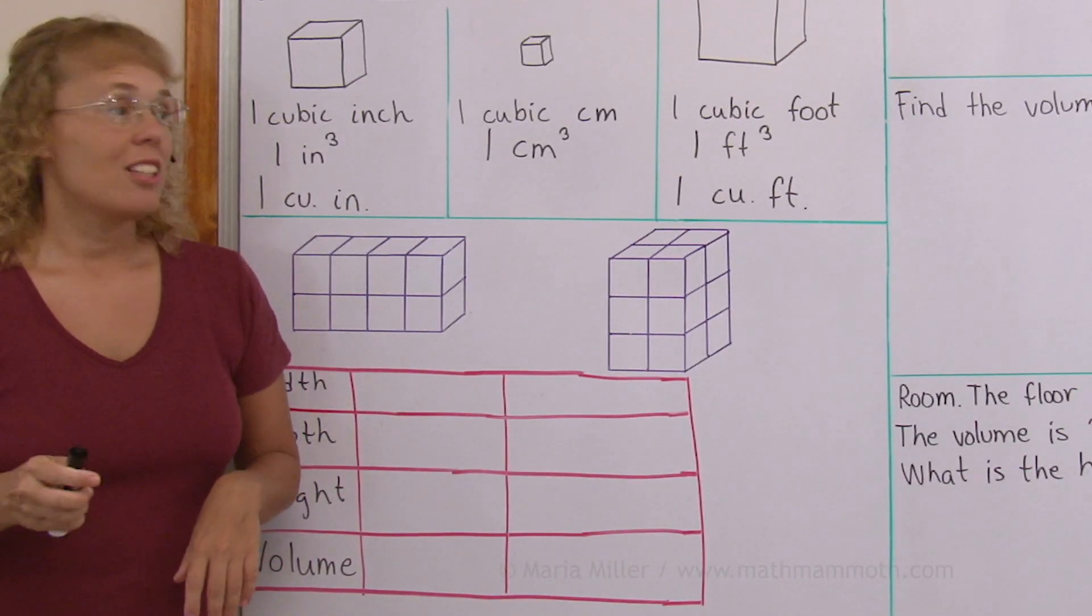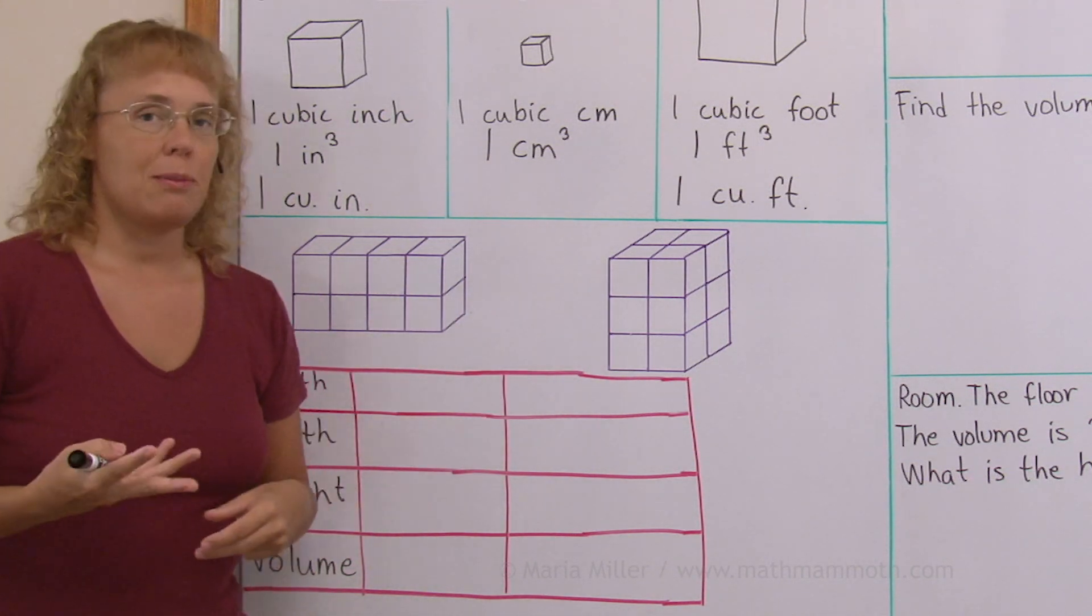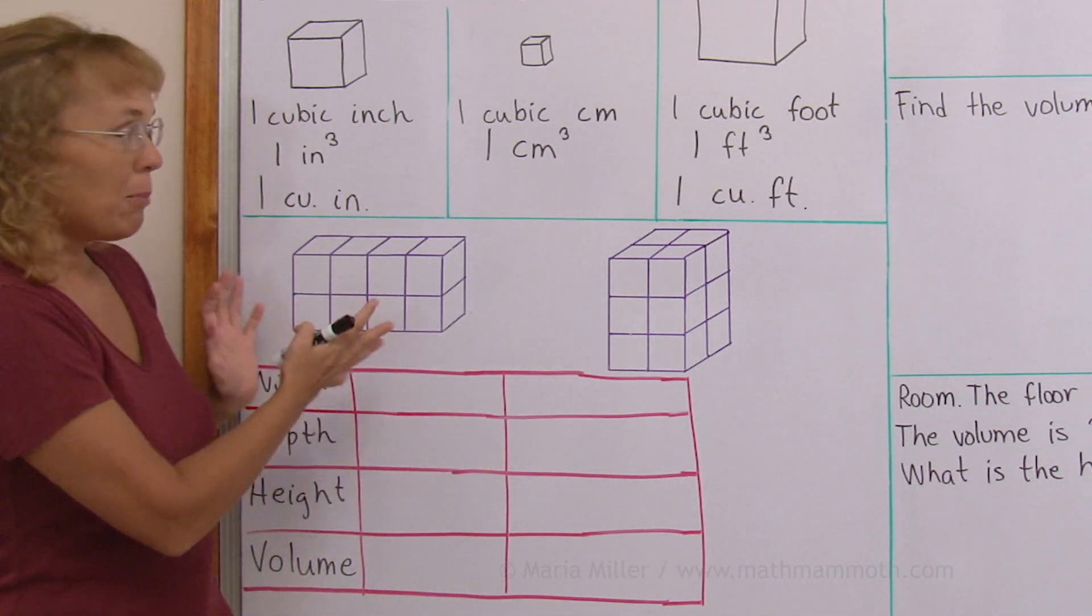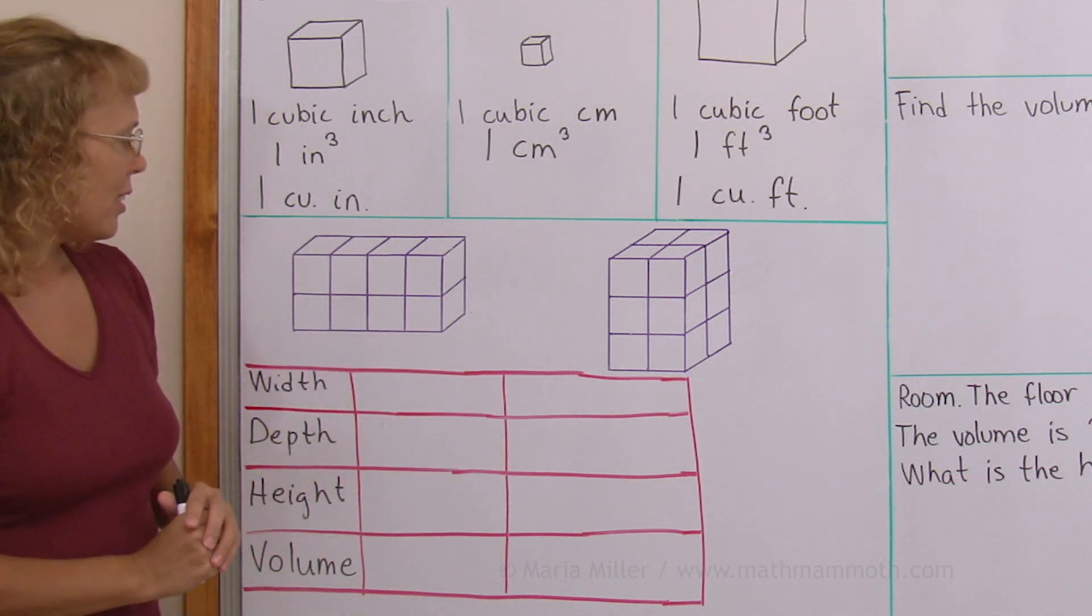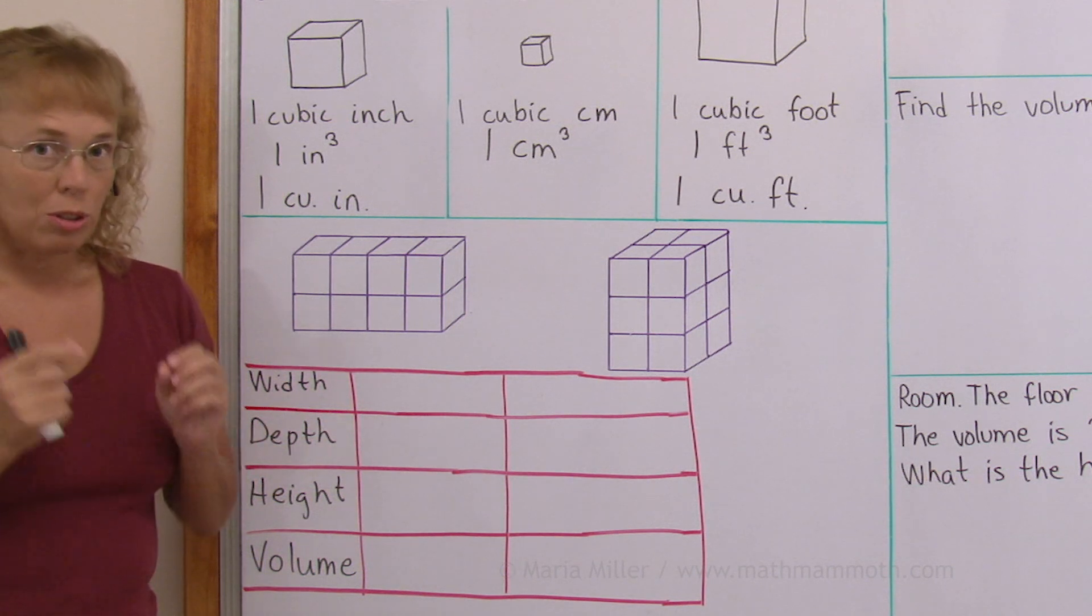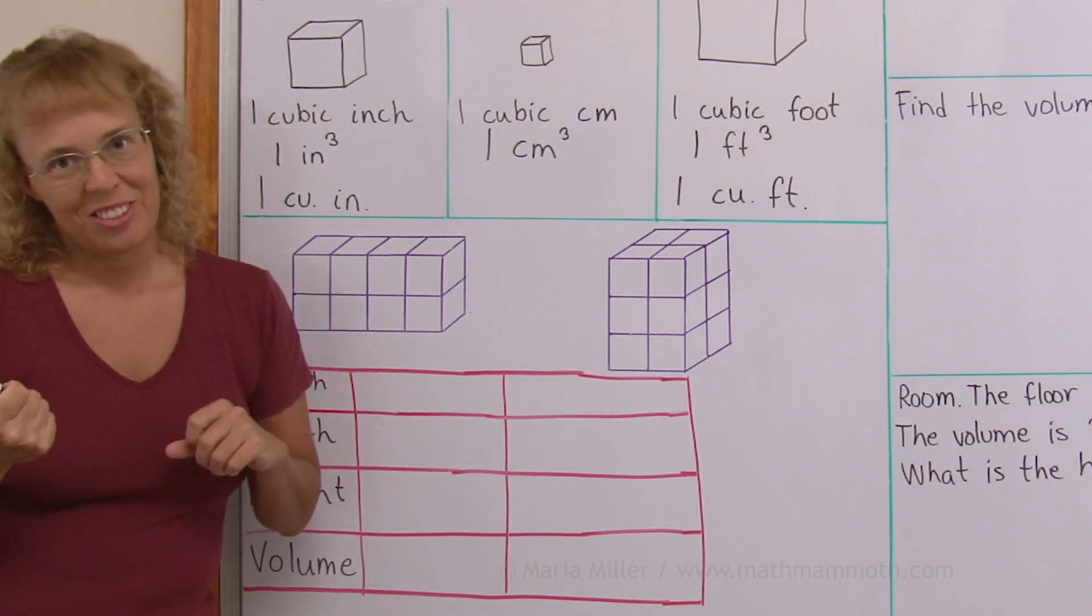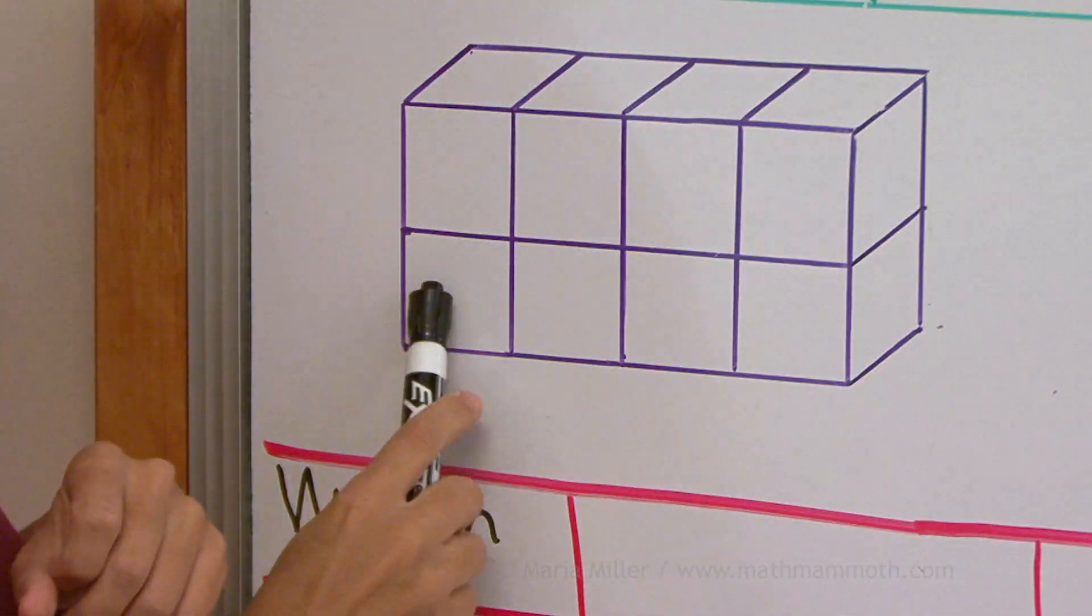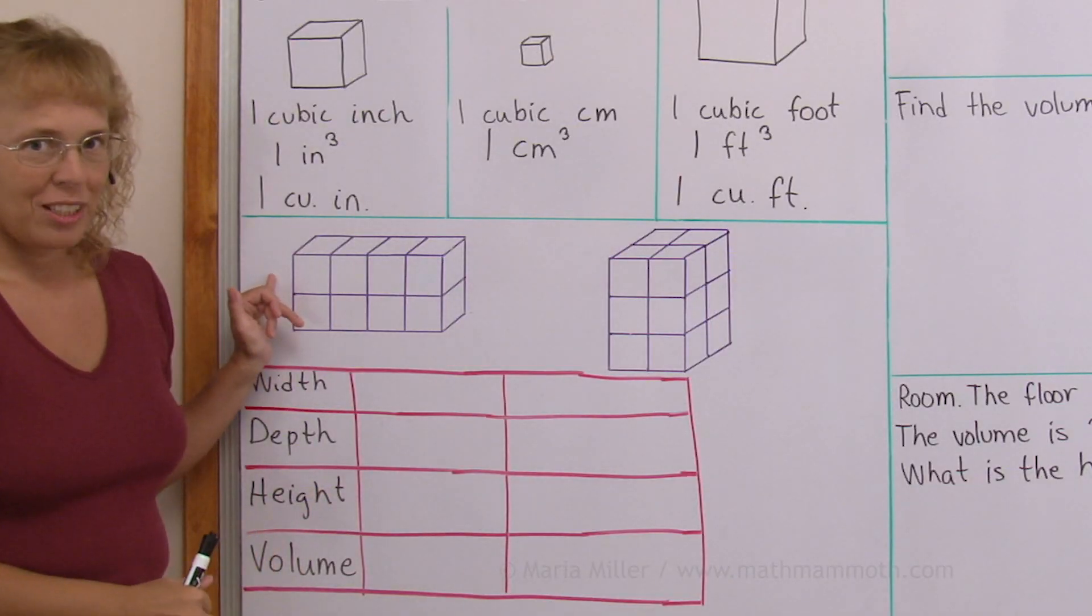Now let's figure the volume of these two rectangular prisms. They're basically boxes, box-shaped figures, and they are already divided into little cubic units. So actually it's very easy to figure out the volume. You just count one, two, three, four, one, two, three, four. So the volume here is eight cubic units.